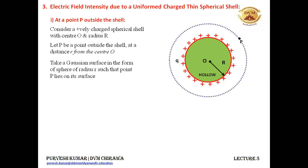This dotted line is our Gaussian surface. It is in the form of a sphere and the radius of this Gaussian surface is small r. We have taken it of radius small r because we want point P to lie on the surface of this Gaussian surface, and since P is at a distance small r from center O, the Gaussian surface must have radius small r.